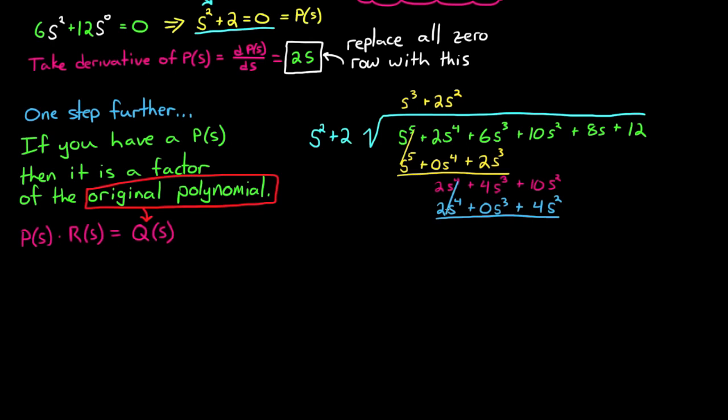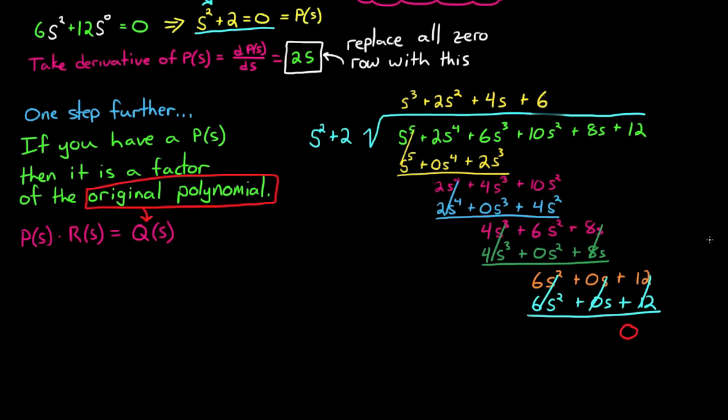You can see that we're left with a polynomial r of s with no remainders left over. And that means that both r of s and p of s are both factors of q of s, or our original polynomial.